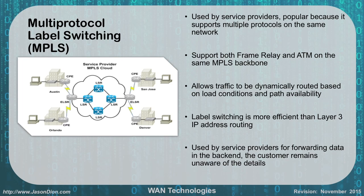The next one is multi-protocol label switching, or MPLS. This is used by service providers and is popular because it can support multiple protocols on the same network — both frame relay and ATM on the same MPLS backbone. It allows traffic to be dynamically routed based on load conditions and path availability, so if one router gets bogged down it can route around it. Label switching is more efficient than layer 3 IP address routing. As a customer, you're unaware of this — MPLS is used on big backbone networks, not inside personal networks.